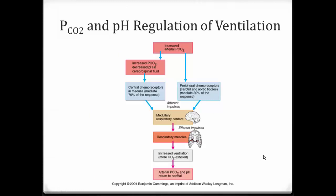Ultimately, it is CO2 partial pressures that have the biggest influence. An increase in partial pressure of CO2 causes a decrease in pH, and this is detected directly via chemoreceptors in the periphery or central chemoreceptors in the medulla. These cause the medullary respiratory centers to increase respiration and ventilation, restoring CO2 levels and pH back to normal.